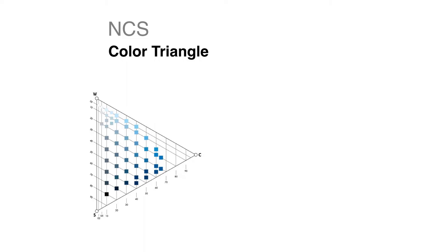The base of each triangle has 100 steps of value from white to black. And the apex, or the outside reach, the outer reach of the triangle, is the value at maximum chroma, also known as chromaticness.